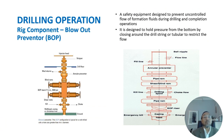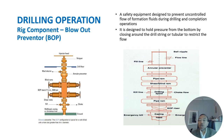The blowout preventer (BOP) is safety equipment designed to prevent uncontrolled flow of formation fluids during drilling and completion operations. It is designed to hold pressure from below by closing around the drill string or tubular to restrict flow. During drilling, mud is pumped down the drill string to lubricate and cool the bit and provide equalizing pressure in the well. If the well's hydrostatic pressure falls below the formation pressure, a kick can occur, allowing gas, oil and salt water fluids to enter the wellbore. Essentially, a BOP shuts off the valve leading beneath the machinery to stop any liquid from surfacing in a dangerous explosion or kick.